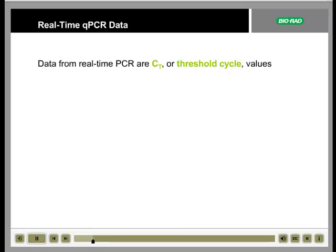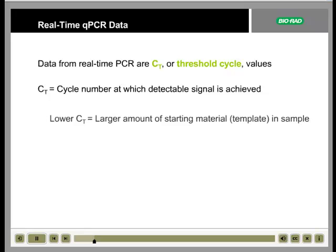The threshold cycle is determined mainly by the amount of template present at the start of the amplification reaction. If a large amount of template is present at the start of the reaction, relatively few cycles are required to generate enough product to give a signal above background. Thus, the reaction will have a low, or early, CT. Conversely, small amounts of template generate larger, or later, CT values. This relationship forms the basis for the quantitative aspect of real-time PCR.